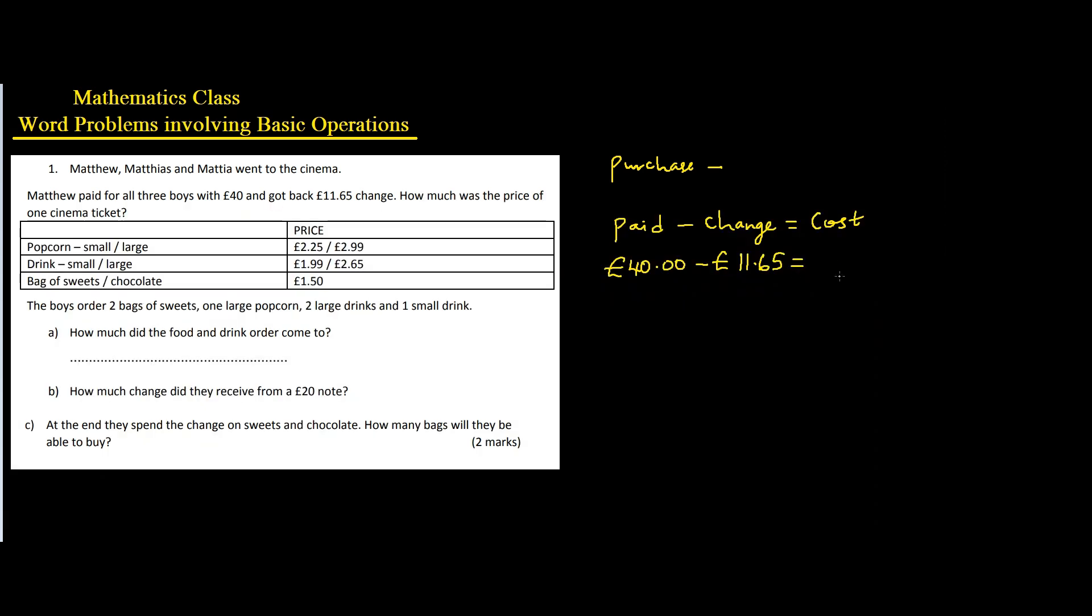So we can say 40.00 minus 11.65. Zero minus five is not possible, and I need to borrow one. So I borrow one from here, this becomes three, then it becomes 10.